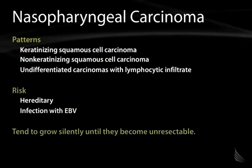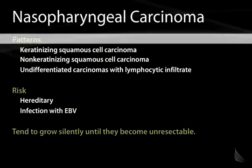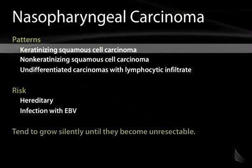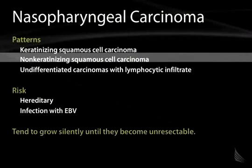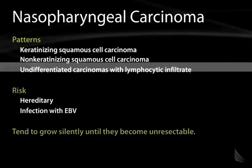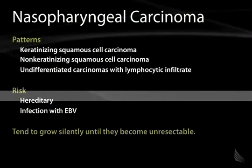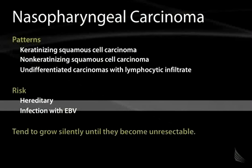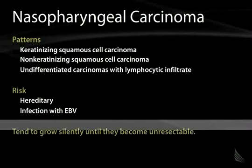Nasopharyngeal carcinoma most frequently presents as squamous cell carcinoma in a variety of patterns — keratinizing, non-keratinizing, or highly undifferentiated with an intense lymphocytic infiltrate. Risk factors include hereditary predisposition and infection with EBV. The tragedy of nasopharyngeal carcinoma is that it tends to grow silently until it reaches an unresectable stage, leaving the patient with very few surgical or therapeutic options.